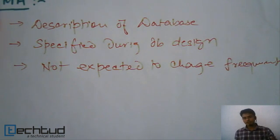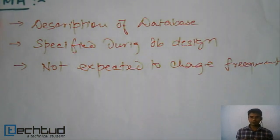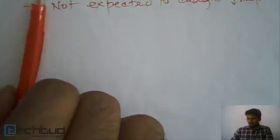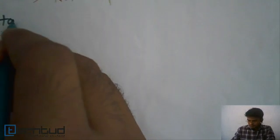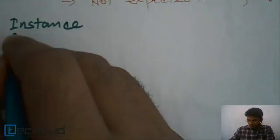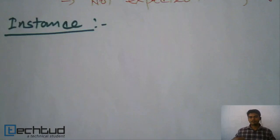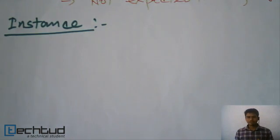So the schema of a database is the definition of the database itself, specified during database design and not expected to change frequently. The next definition we will understand is instance — what is a database instance. Consider a database: the data available in a database at a particular moment of time is what we call a snapshot.